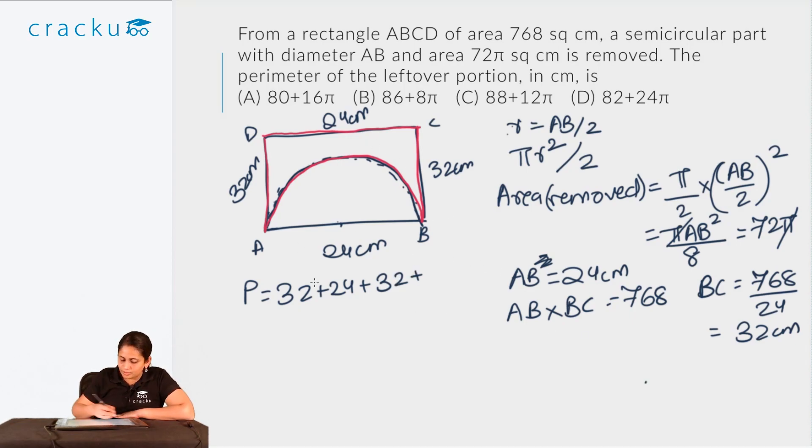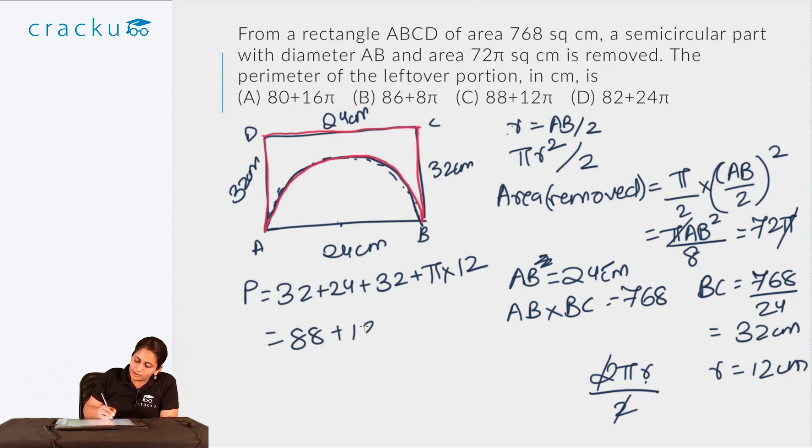So the new perimeter would be 32 plus 24 plus 32 plus the perimeter of the semicircular part. Generally, this perimeter would be essentially the circumference of the circle. Now since this is a semicircle, instead of 2πr, you have 2πr/2, that is just πr. R equals AB/2, AB is 24 centimeters. So R would be 12 centimeters. So what is the perimeter of this part? That is π times 12. So we get 88 plus 12π. So the right answer is option C, 88 plus 12π.